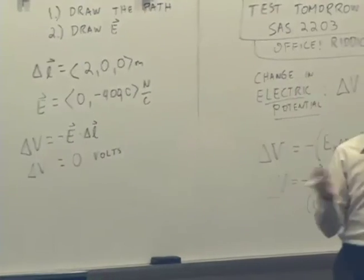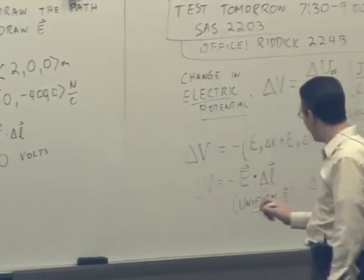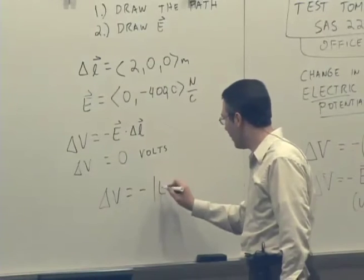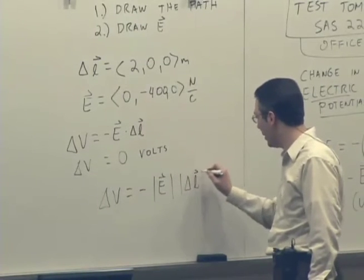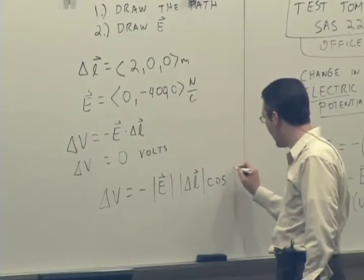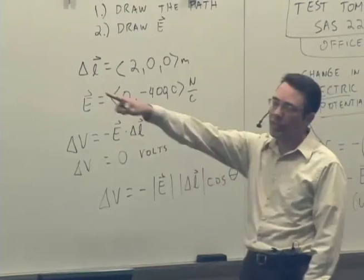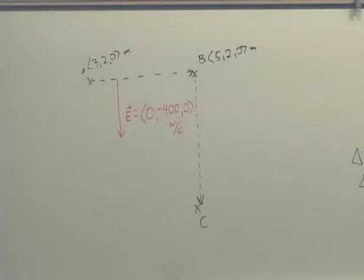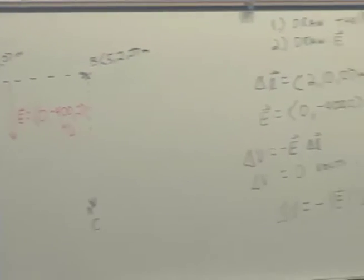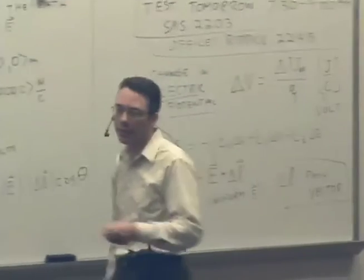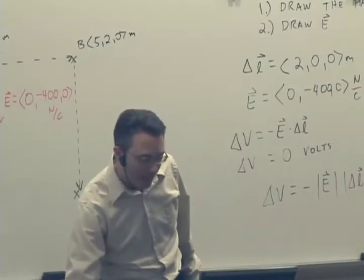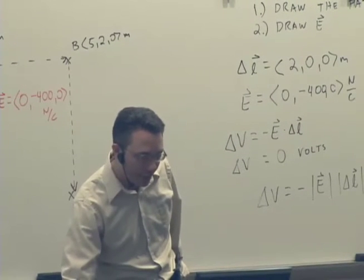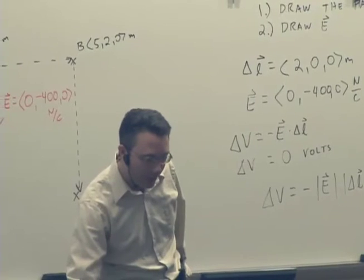We could do it the other way by looking at magnitudes and angles. Delta V is negative magnitude of E times magnitude of delta L times cosine of the angle between those two vectors. What's the angle between the path (pointing in X) and the electric field (pointing in negative Y)? It's 90 degrees. Cosine of 90 is zero. No matter how you slice it, you get zero. That's kind of interesting — if the electric field is perpendicular to the path, the potential difference equals zero.